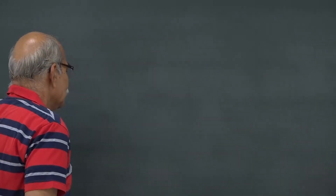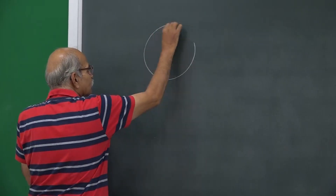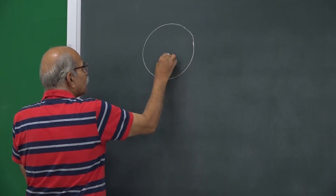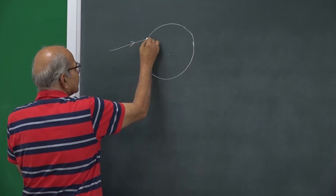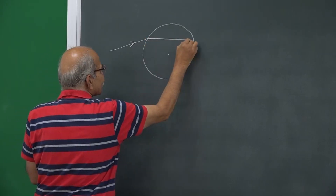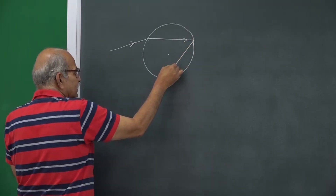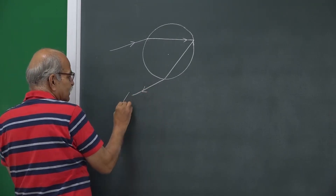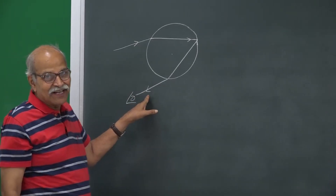The textbook diagram shows a spherical water drop where sunlight falls at some angle, refracts at entry, reflects internally, refracts again at exit, and the observer sees the rainbow through this particular transmitted ray.